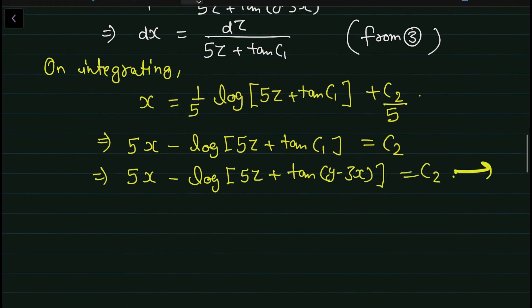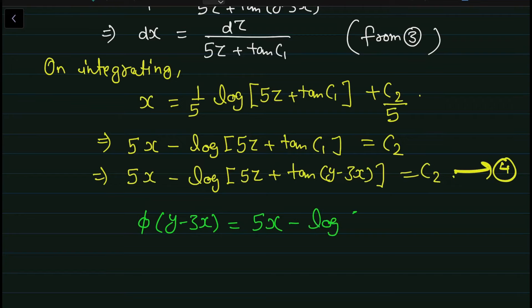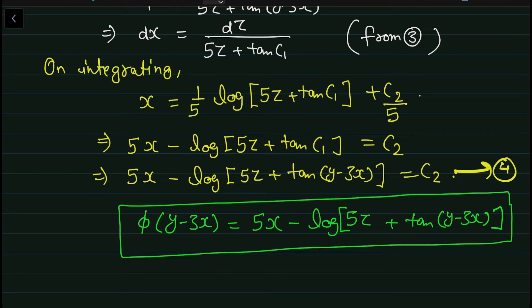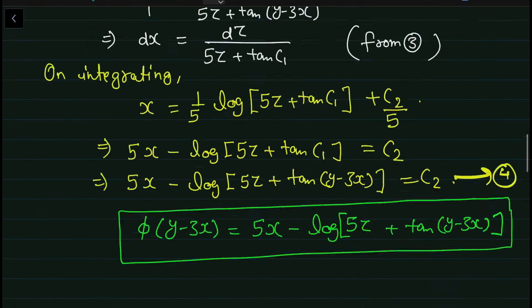तो final answer लिखेंगे: φ(y − 3x, 5x − log(5z + 10(y − 3x))) = 0। यह question काफी important है exam के point of view से और exam में बहुत बार पूछा जाता है। अब एक और example देखते हैं।